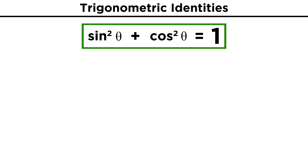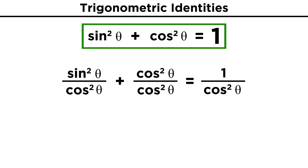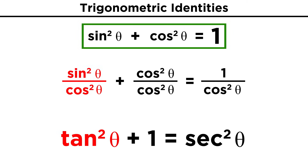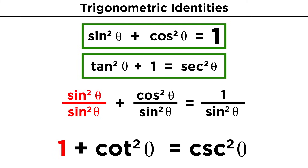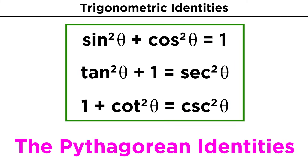We can also use this to derive other useful identities. If we divide everything by cosine squared theta, this term becomes tangent squared, this term becomes one, and this term becomes one over cosine squared, or secant squared. If instead we were to divide by sine squared theta, we get one plus cotangent squared equals cosecant squared. So these are the three Pythagorean identities.